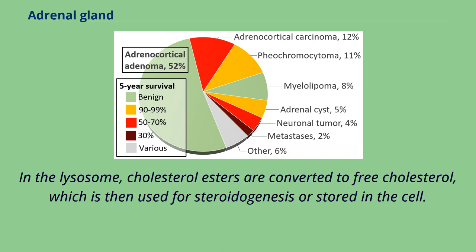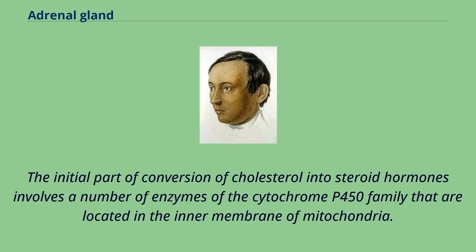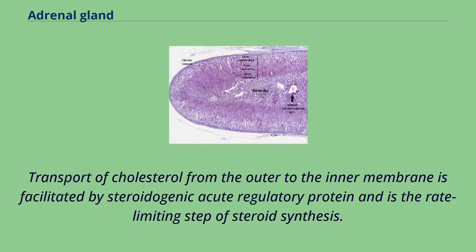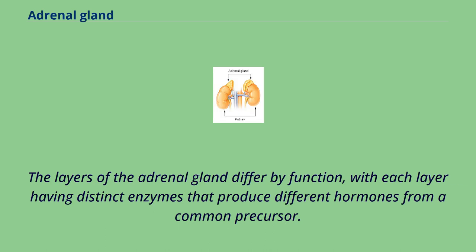In the lysosome, cholesterol esters are converted to free cholesterol, which is then used for steroidogenesis or stored in the cell. The initial part of conversion of cholesterol into steroid hormones involves enzymes of the cytochrome P450 family located in the inner membrane of mitochondria. Transport of cholesterol from the outer to the inner membrane is facilitated by steroidogenic acute regulatory protein and is the rate-limiting step of steroid synthesis. The layers of the adrenal gland differ by function, with each layer having distinct enzymes that produce different hormones from a common precursor.